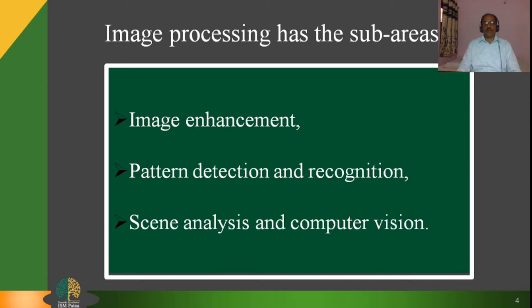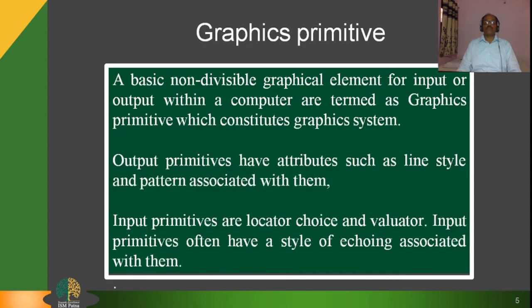A basic non-divisible graphical element for input or output within a computer graphics system is known as a primitive. Some primitives are known as input primitives, whereas some are known as output primitives. Output primitives have attributes such as line style and patterns associated with them, whereas input primitives are locator, choice, and evaluators. Input primitives often have a style of echoing associated with them.